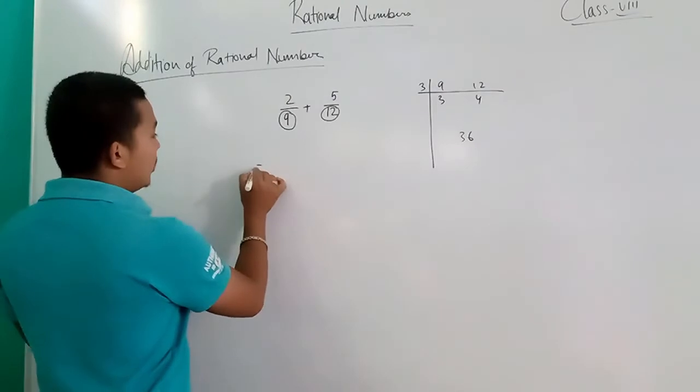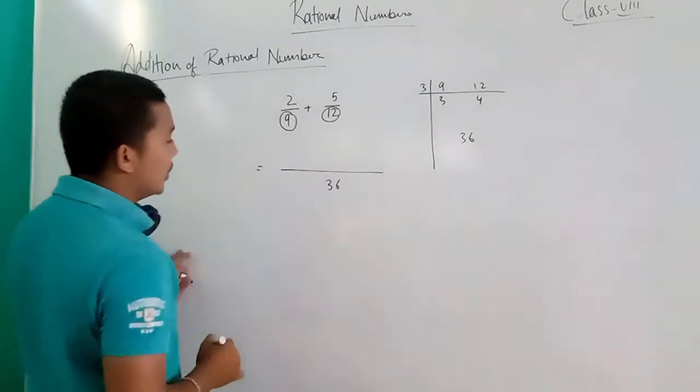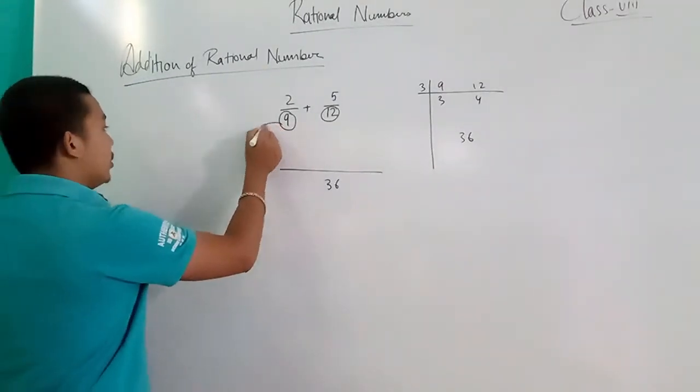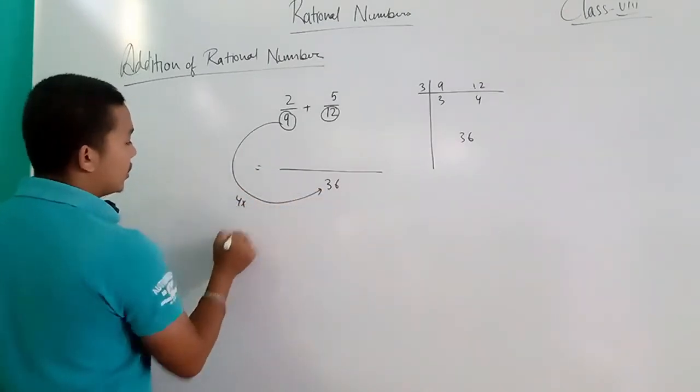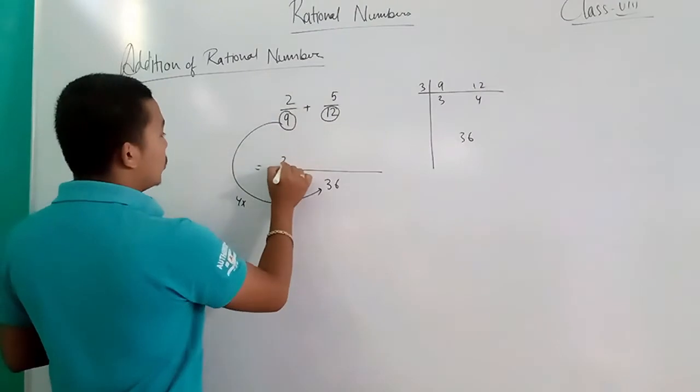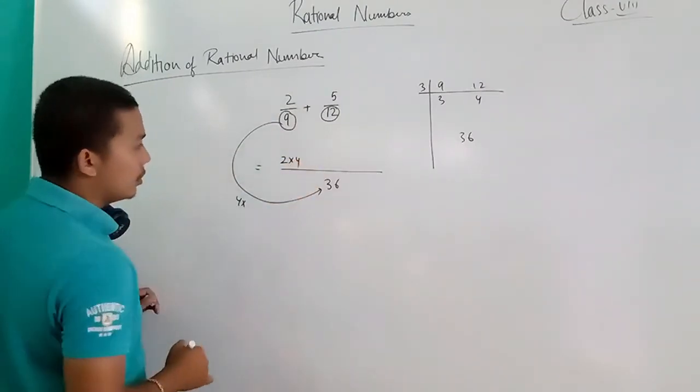Let's add. 36. So, 9 goes into 36 how many times? 4. That means 2 into 4.